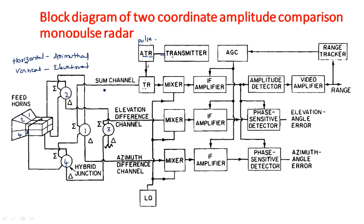There is only one transmitted signal, which is connected through a hybrid junction to the four feeds. The output of this hybrid junction is distributed to the feeds, which radiate the signal into free space. Four different waveforms — four different pulses — are transmitted through the four different feeds.